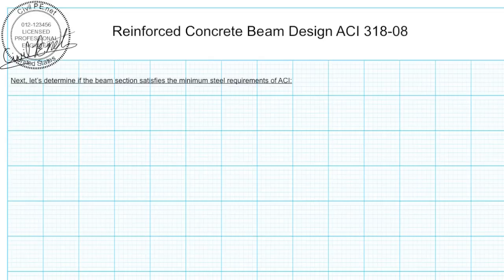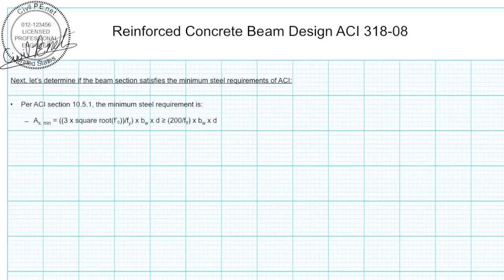Now let's determine if the beam section satisfies the minimum steel requirements of ACI. ACI section 10.5.1 gives minimum steel requirements. These are to ensure that if concrete cracks it's not going to immediately fail. We want to make sure that the steel yields and stresses but doesn't actually break. Section 10.5.1 provides that the minimum steel is equal to 3 times the square root of f'c divided by f sub Y times the width of our beam web times the depth d. This has to be greater than or equal to 200 over f sub Y times the width of our beam web times d.